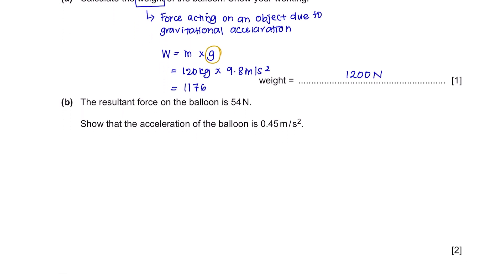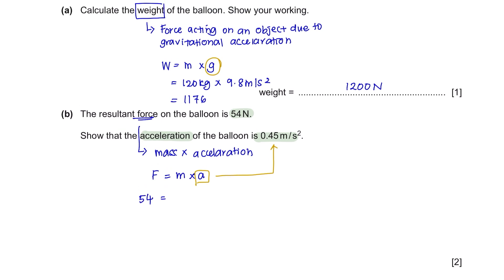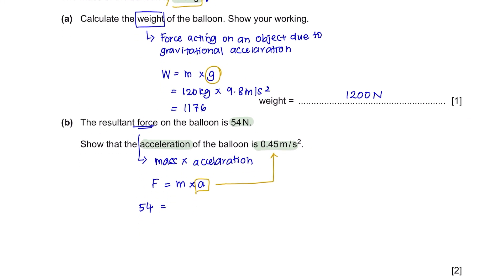Question B. The resultant force on the balloon is 54 newtons. Show that the acceleration of the balloon is 0.45 meters per second squared. The formula to calculate force is equal to mass multiplied by the acceleration. You need to show that the value of acceleration is 0.45 meters per second squared. Your force is 54 newtons and your mass is given in the first part of the question which is 120 kg. Rearrange your formula to get the value of A which is 0.45 meters per second squared. And there you have it, 0.45 is proven.